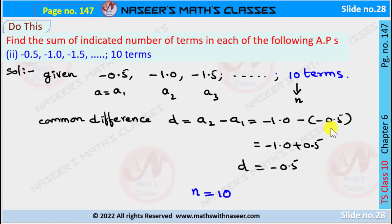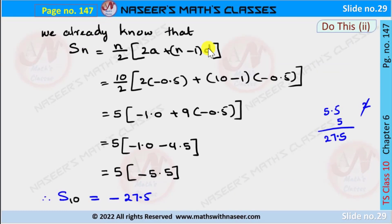We find the common difference: d = a₂ − a₁ = −1.0 − (−0.5). Since minus × minus = plus, this becomes −1.0 + 0.5, giving d = −0.5. With n = 10, we apply the sum formula: Sₙ = n/2 × (2a + (n−1)d).